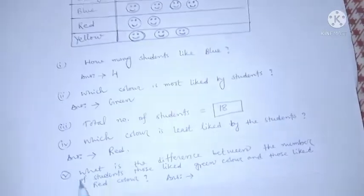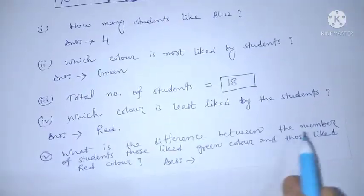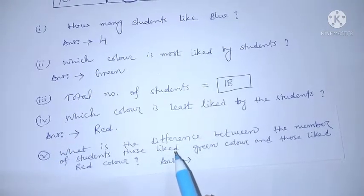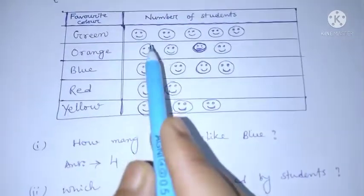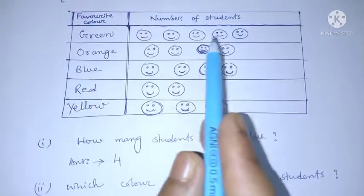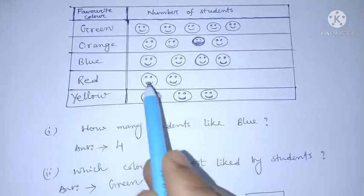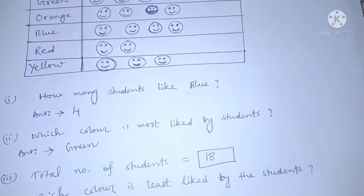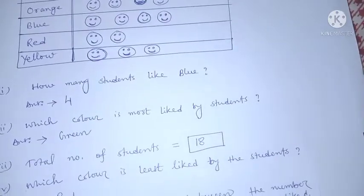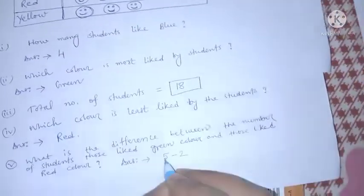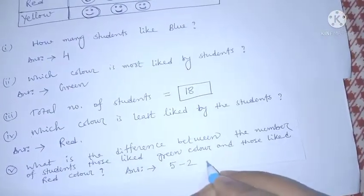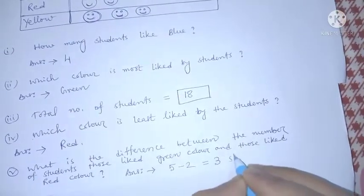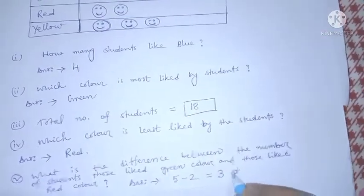What is the difference between the number of students who liked green and those who liked red? Five students like green, two students like red. The difference is five minus two equals three.